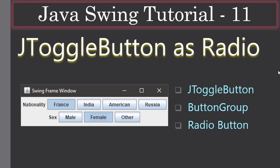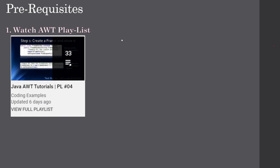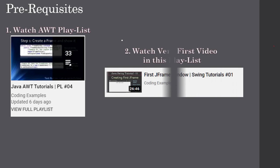As a prerequisite, you can watch the AWT playlist — it's optional but it will give you good hands-on experience and make your life easier with Swing tutorials. This is the second video in this Swing series. The first video, where we create a frame window, is mandatory, as we will build all other examples on top of that.